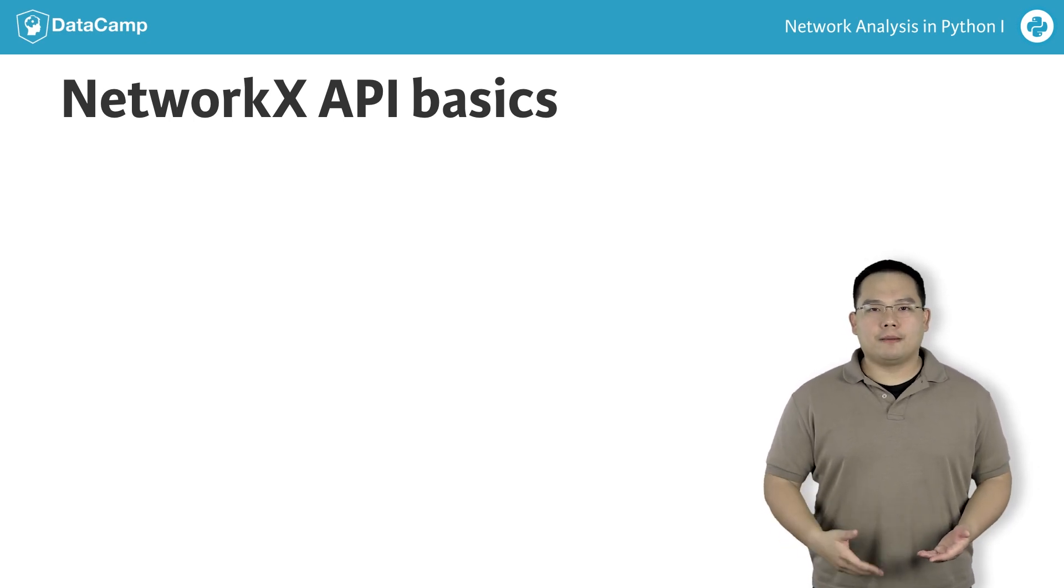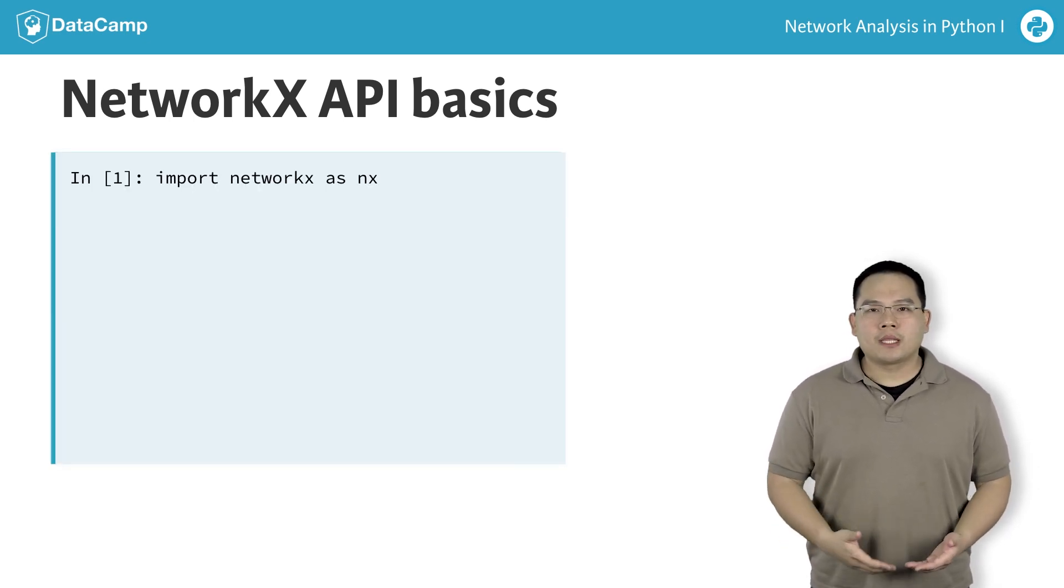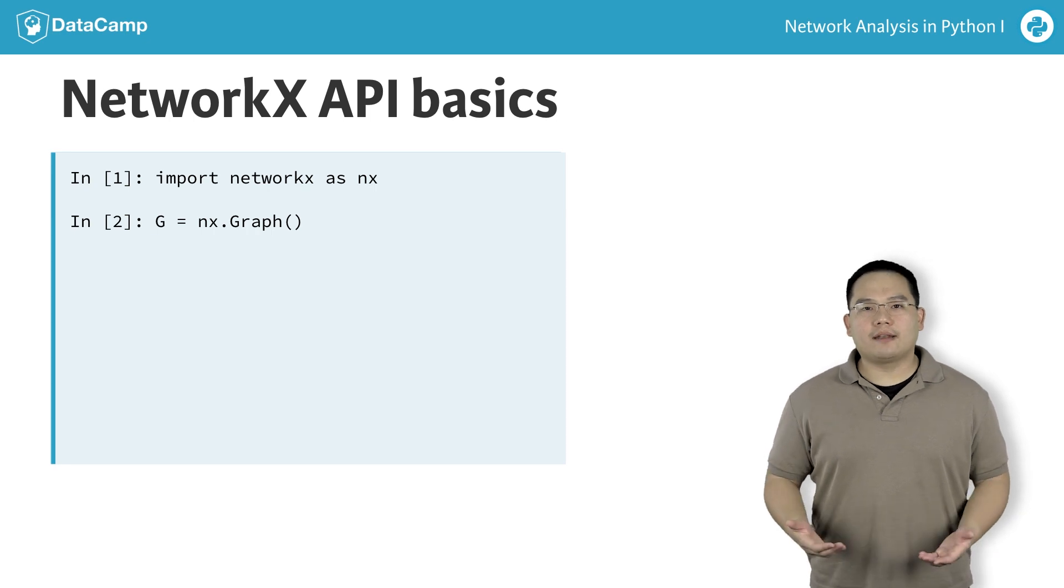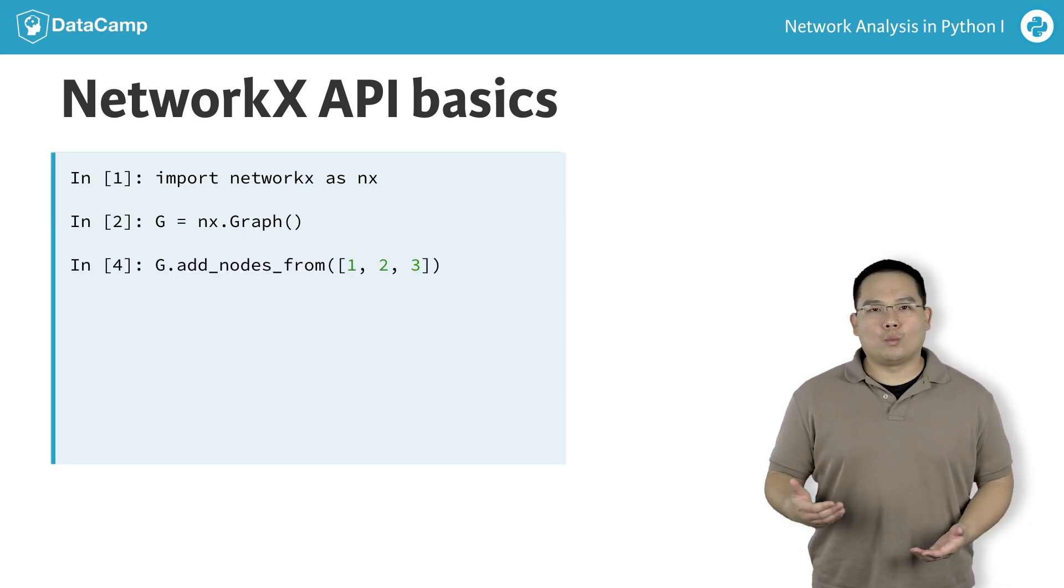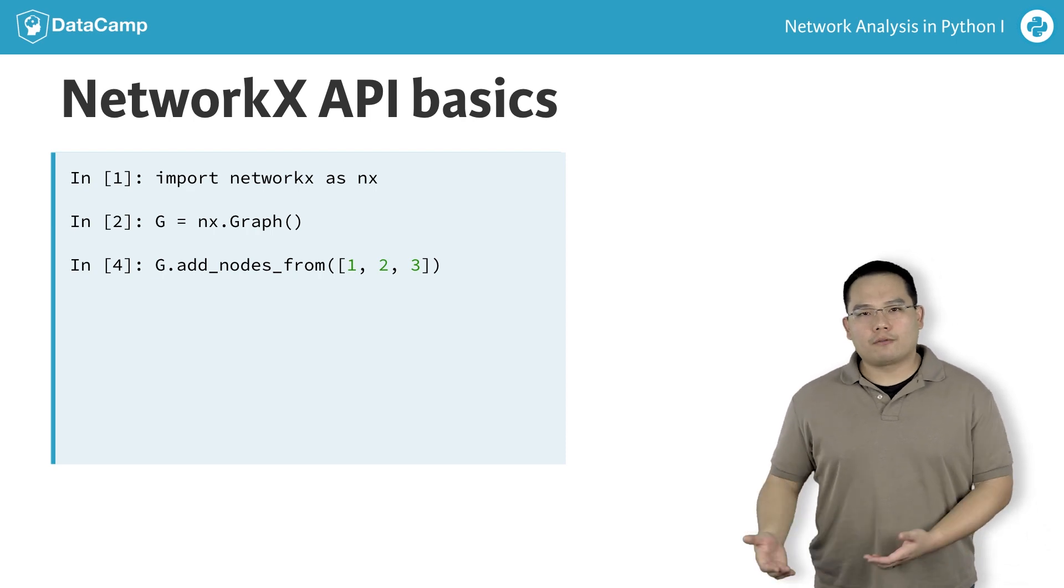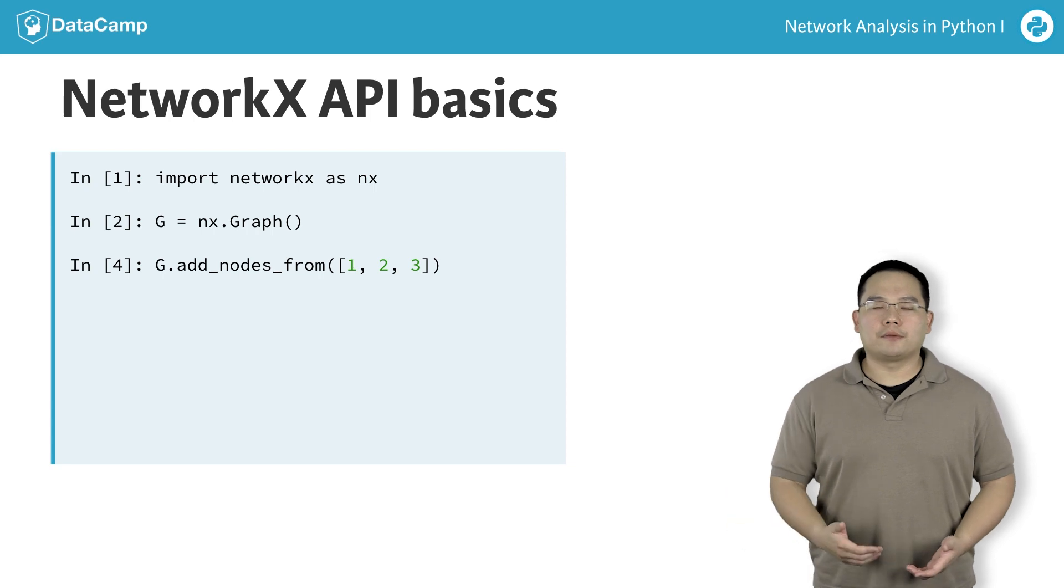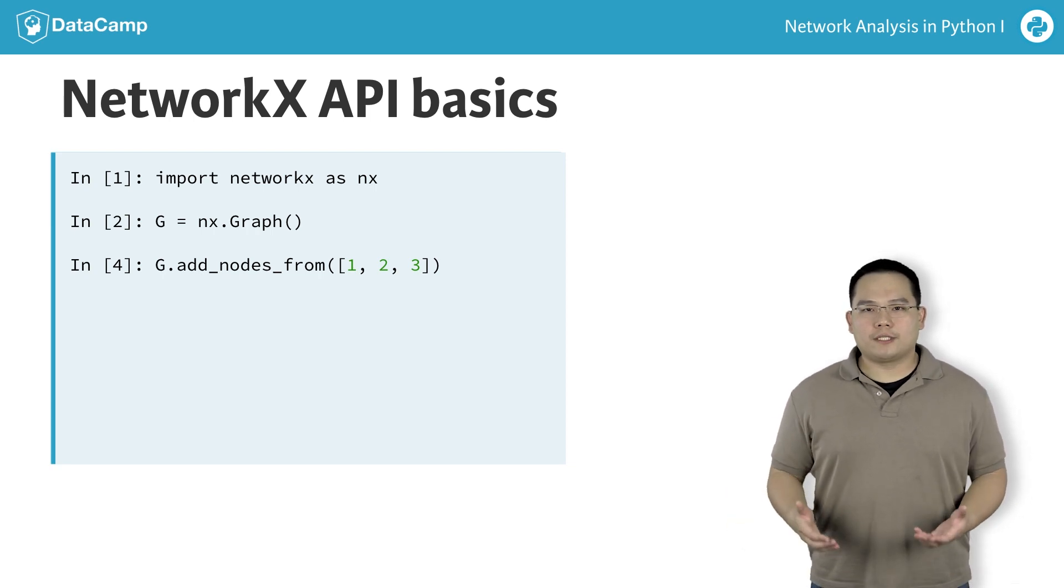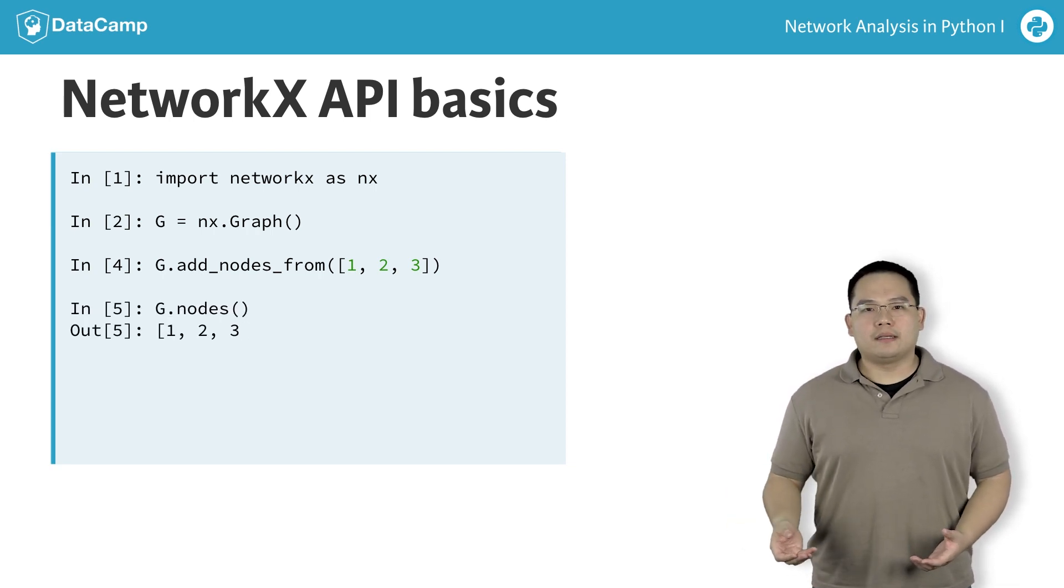NetworkX is typically imported as NX. Using nx.graph, we can initialize an empty graph to which we can add nodes and edges. I can add, for example, the integers 1, 2, and 3 as nodes, using the addNodesFrom method, passing in the list 1, 2, 3, as an argument. The graph object G has a .nodes method that allows us to see what nodes are present in the graph, and returns a list of nodes.